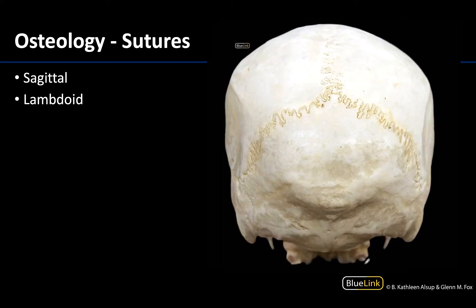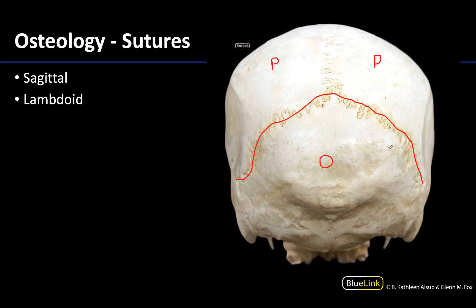Here we are looking at a posterior view of the cranium. Let's ID the bones. You have your two parietal bones here, and you have a much better view of the occipital bone — that posterior-most bone — which makes sense. You can see a much clearer view of the lambdoidal suture and its complexities between the parietal bones and the occipital, and then of course you have that sagittal suture between the parietal bones.